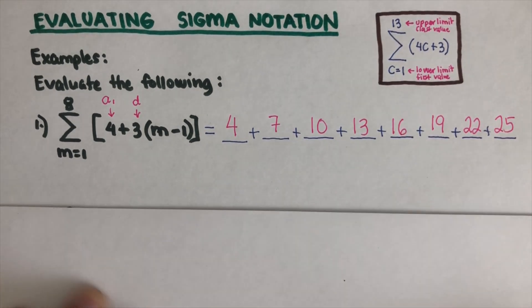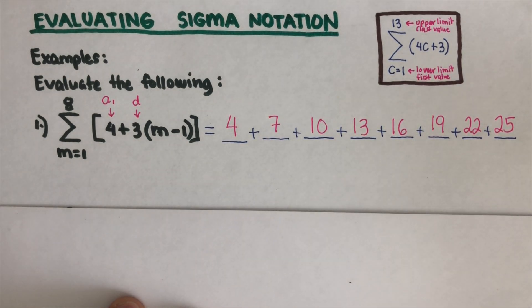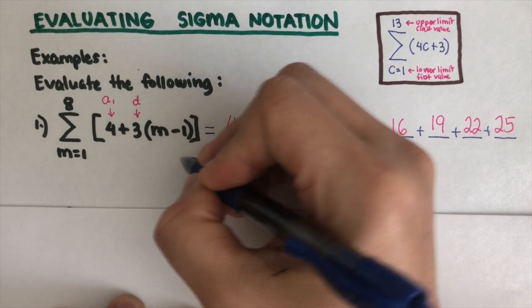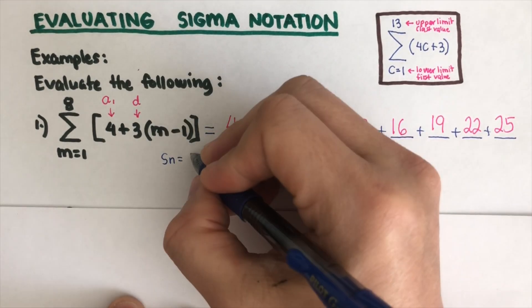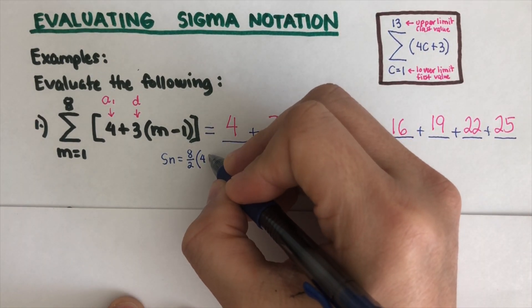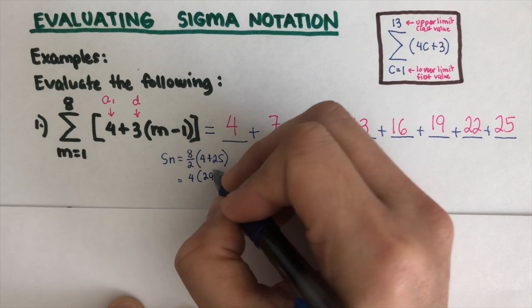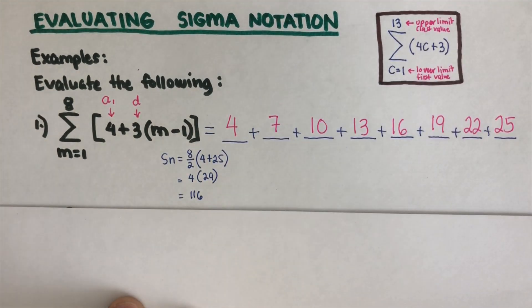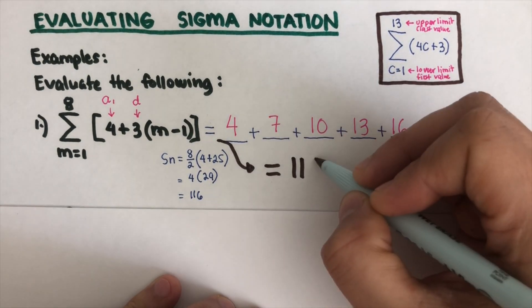Our task is to find the sum of this. How do we find the sum? We are going to use the formula that we had in the other video. So Sₙ is actually equal to n, the number of terms, so that's 8 divided by 2 times the first term, which is 4, and then the last term is 25. So this would be 4 times 29, and that is 116.